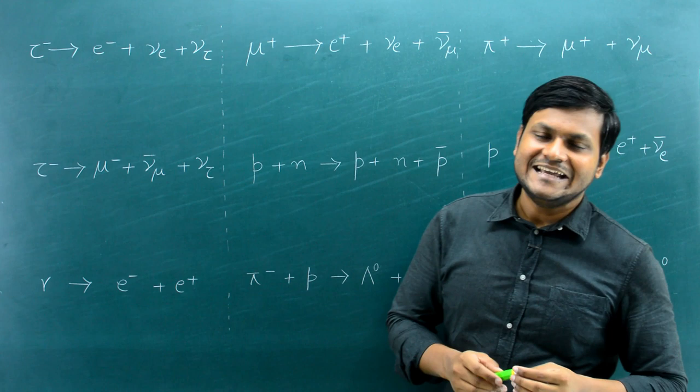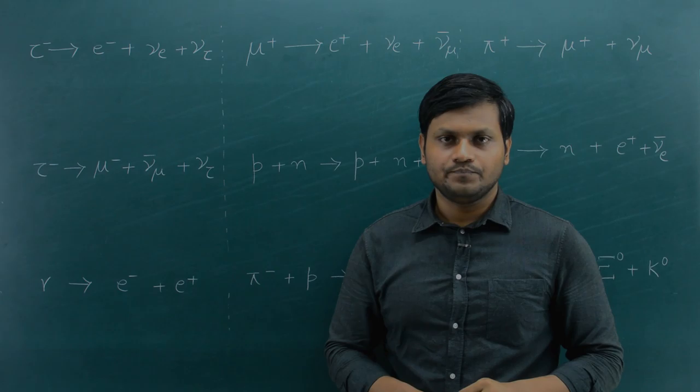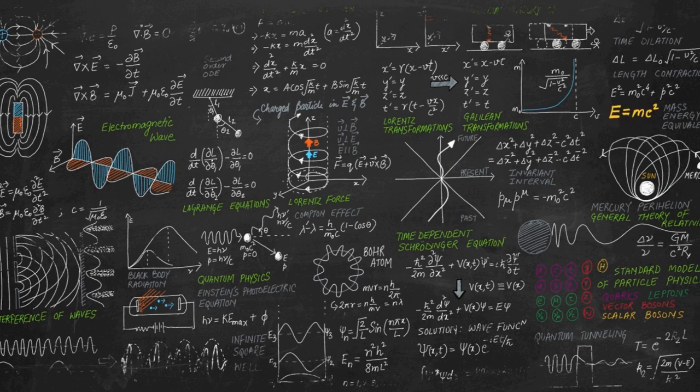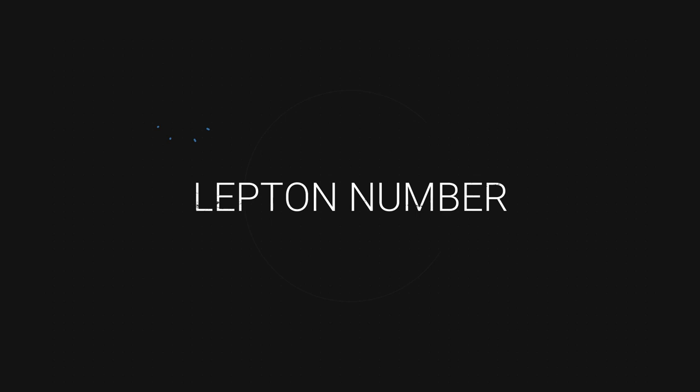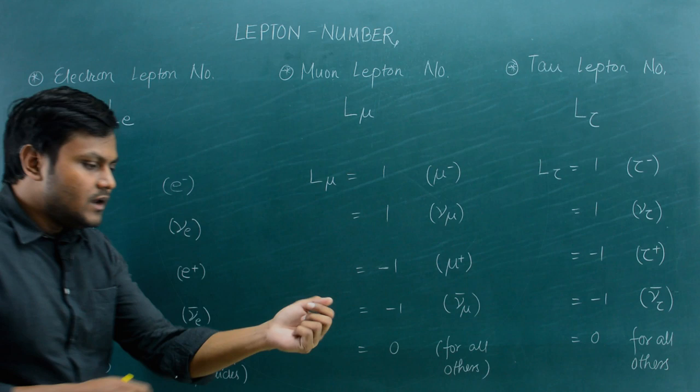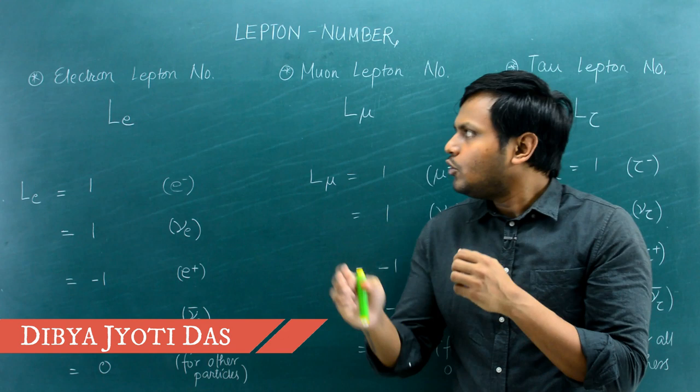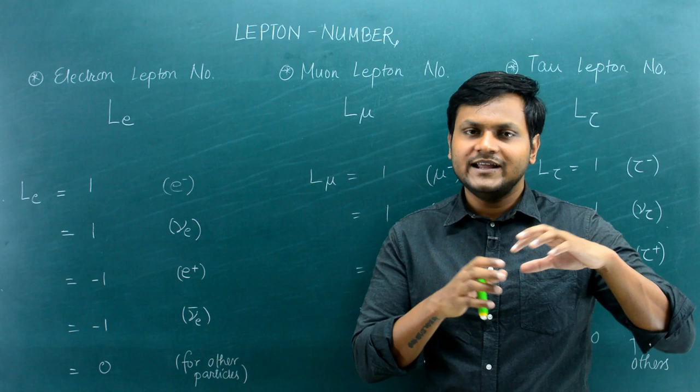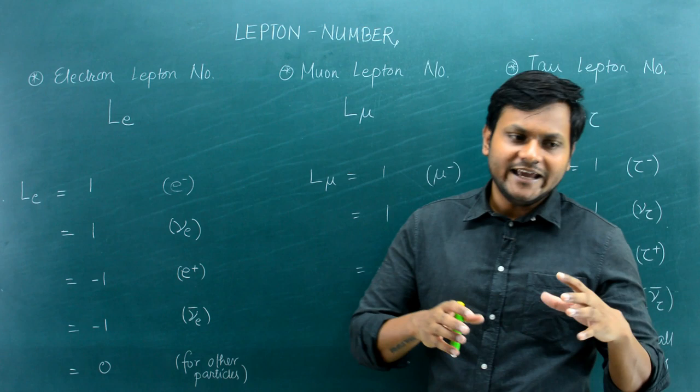So that is what I'm going to talk about today in this video. Let us first talk about the lepton quantum number — a number that we can associate with particle interactions involving lepton particles. Lepton particles are elementary particles that do not experience the strong force.